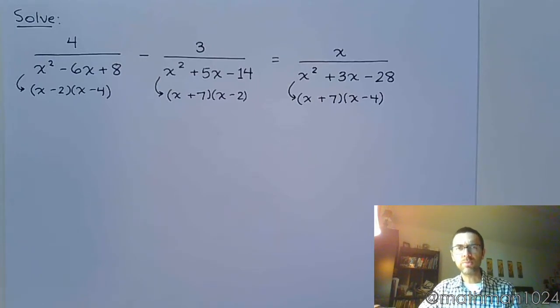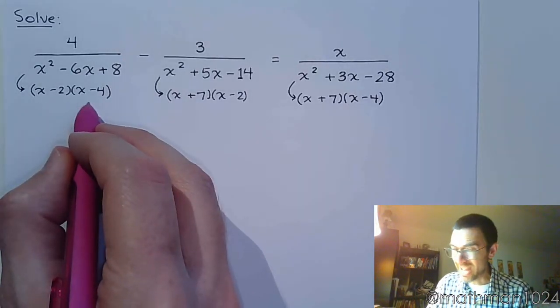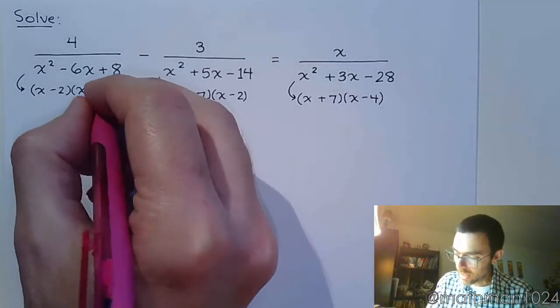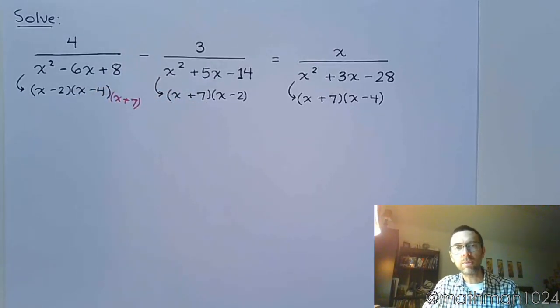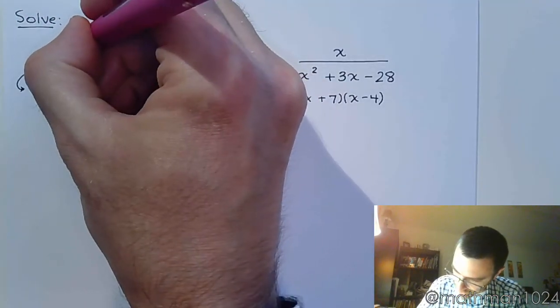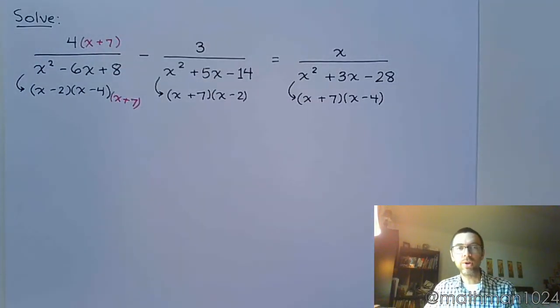And just like the last problem, you just find those missing factors and you start putting them in. So what factor's missing from this denominator that everybody else has? It's the factor (x + 7). If you leave the problem like this, this is bad. You have to also include that factor in the numerator. You can't just put it in the bottom, it's got to go in the top as well.